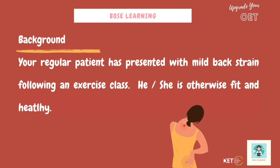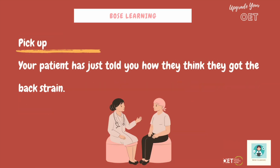Let's get started and take a look at the background. Imagine that your regular patient has presented with mild back strain following an exercise class. He or she is otherwise fit and healthy. The OET will always give you a background in your task card — they'll tell you things like 'your patient' or 'your regular patient', so you already know them. Think about the situation: it's a clinic, a GP practice, somewhere familiar. It's not an emergency. We're picking up this role play a little way in — your patient has just told you how they think they got the back strain, which was in the exercise class.